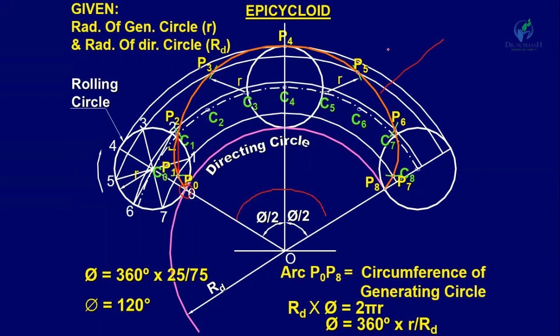To draw the tangent and normal at a point 115 mm from the center: mark point S at 115 mm. With S as center and radius 25 mm, draw an arc intersecting the center circle at point U. Join U with O and extend it to intersect the directing circle at point N. Join N to S — this is the normal. A line perpendicular to this normal through S is the tangent.